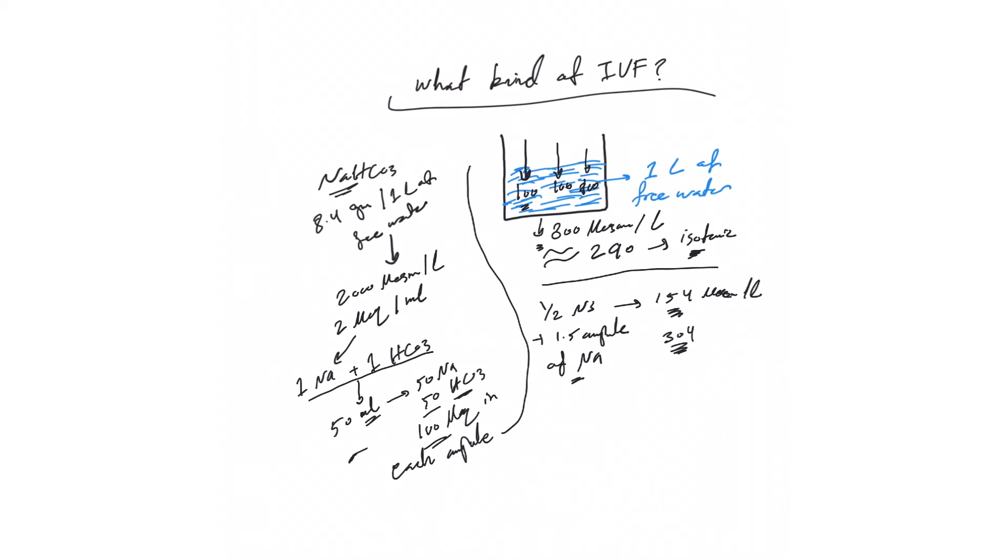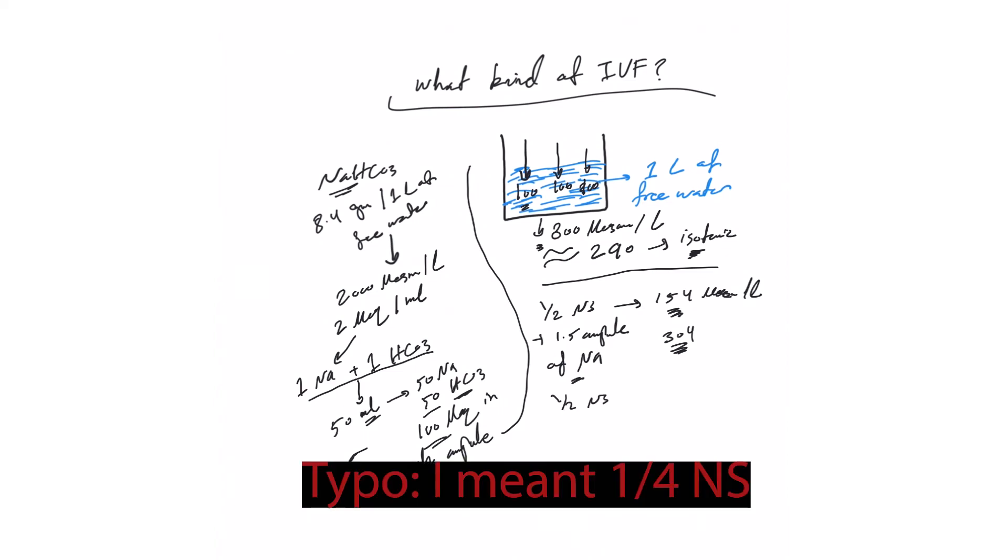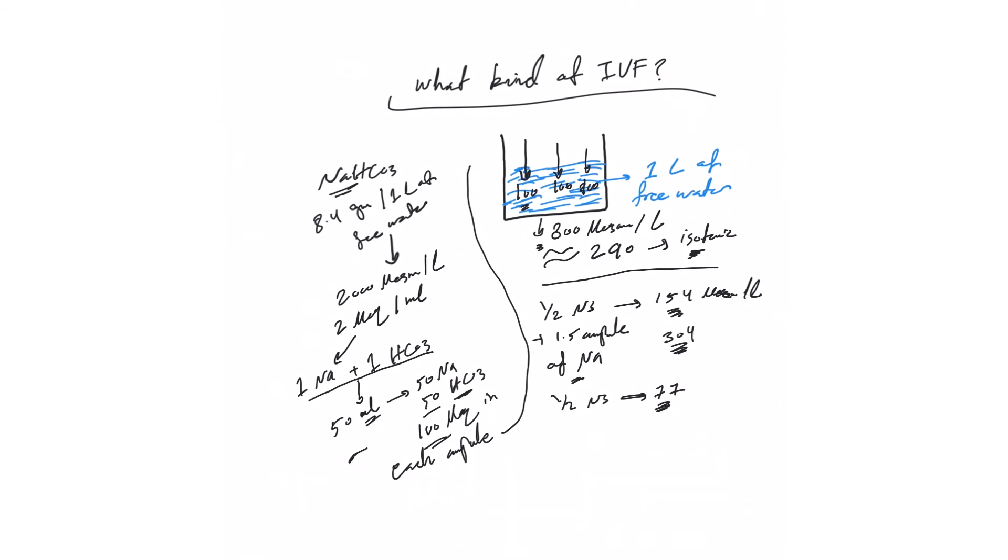Basically with this, you can create your isotonic or hypotonic solution the way you want. You can say I want a quarter normal saline. That will give you 77 milli equivalent. To get it to 300, I need around 230 or let's say 250. So you need two and a half amps, which will give you similar isotonic solution.